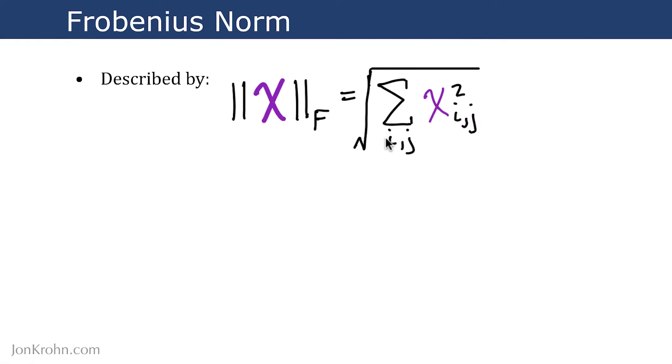Then to actually calculate the Frobenius Norm, we consider each of the elements in our matrix X. So this is not in bold because this is an individual element of this bolded matrix tensor X. So we're considering each of the individual elements.